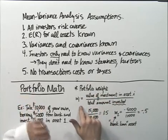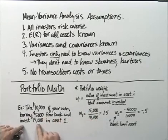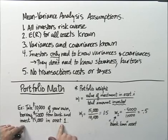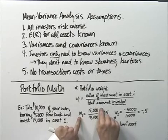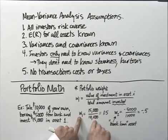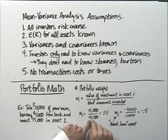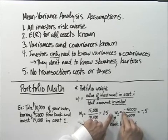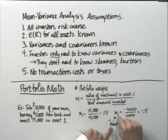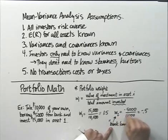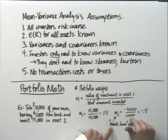Let me give a quick example. Suppose you take $10,000 of your own, borrow $5,000 from the bank, and invest the total proceeds of $15,000 in asset one. According to my definition, the portfolio weight on asset one is $15,000 — the total value of your investment in asset i — divided by the $10,000 you have personally invested. You've borrowed the rest. The borrowing is actually a separate asset, asset two, and the portfolio weight on that asset W2 is a negative $5,000 divided by $10,000, since the minus sign signifies that you're borrowing rather than lending.